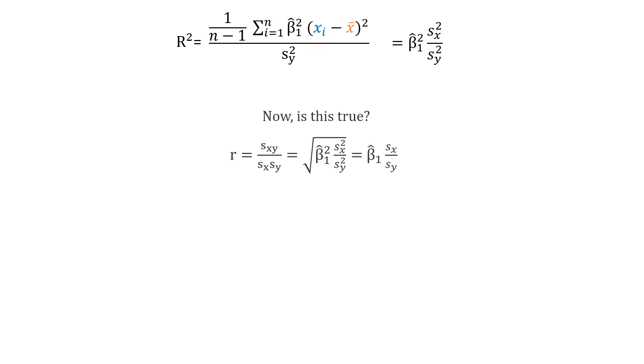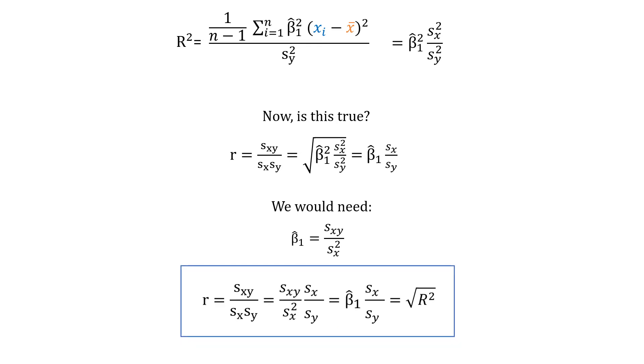Now we take the square root and compare this to the definition of Pearson's r. Is this the same? You might see that this is true as long as beta 1 hat equals the covariance divided by the variance of x. This is indeed the case, so Pearson's r is the square root of r squared. Now it might be unsatisfying to explain one aspect by introducing another one that needs explanation, in this case the formula of beta 1 hat, but this proof is quite lengthy and is too detached from the topic of this video, so I will not go into detail here.